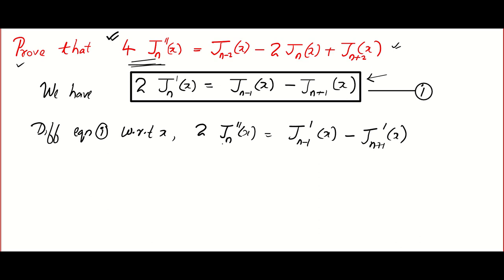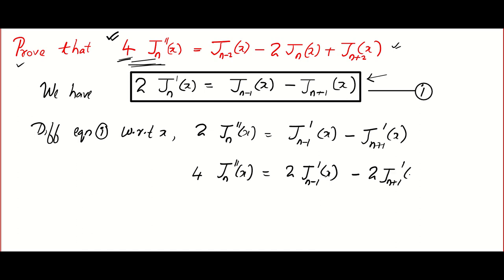Everything looks okay but here we have a 4 — that's very easy. Multiply throughout by 2, so what is 2 into 2? 4Jn''(x) is equal to 2Jn-1'(x) minus 2Jn+1'(x). You can be a little bit happy because you have found the left-hand side of what we have to prove.